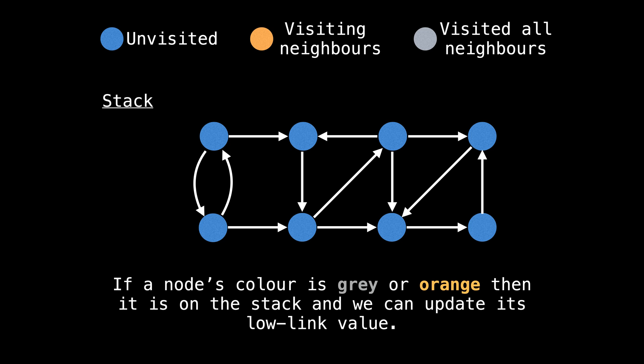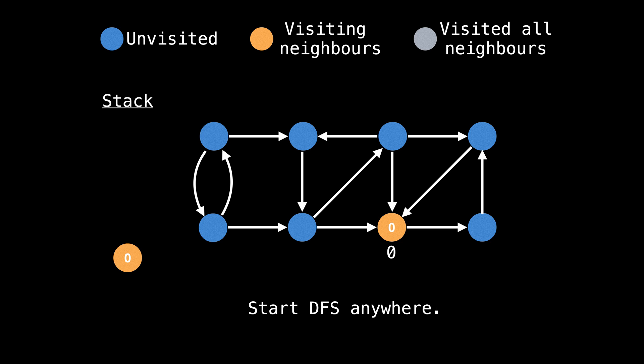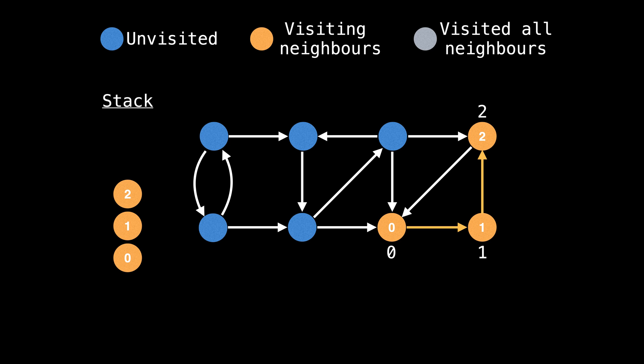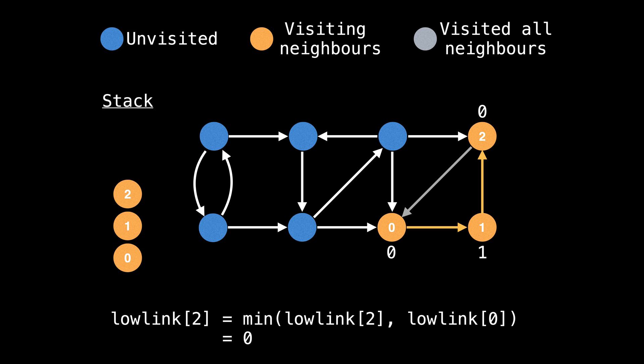Let's do an example. I'm going to mark unvisited nodes as blue, nodes for which the depth-first search is still exploring some neighbors as orange, and nodes which the depth-first search has explored all of its neighbors as gray. Note that if a node is orange or gray, then it is on the stack and we can update its low-link value. I will also be tracking the nodes which are on the stack in the left column. So let's start our depth-first search — just randomly pick a node and start there. As we explore unvisited nodes, give each node an ID and a low-link value equal to the ID. So now we're at node two, and our only option is to now visit node zero. Since node zero is already visited, we don't want to visit it again.